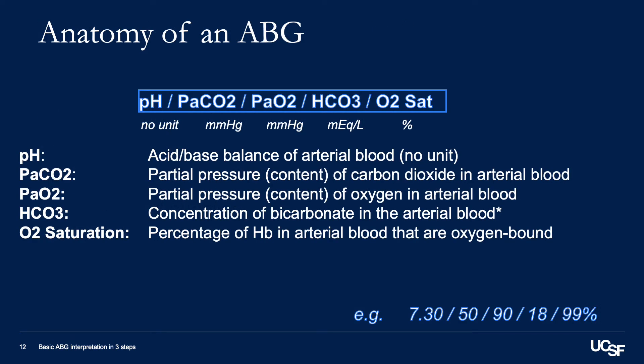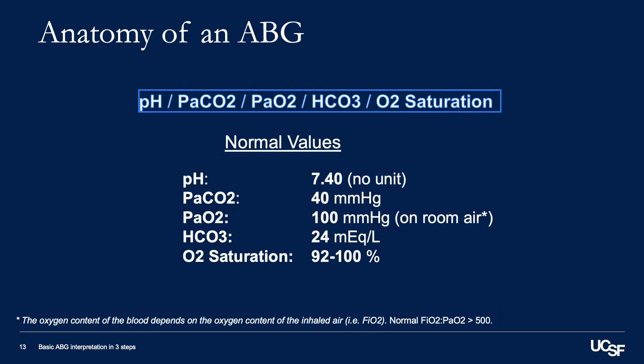Let's explore the components of a typical ABG. First is the pH, followed by the partial pressures of carbon dioxide and oxygen in the blood, listed in millimeters of mercury because their gas is dissolved in liquid. Next is the bicarbonate level in the blood, written in concentration as milliequivalents per liter, and the oxygen saturation, which is the same as you might get from a pulse oximeter on your finger. The typical normal values for each of these are provided in the one-page take-home.